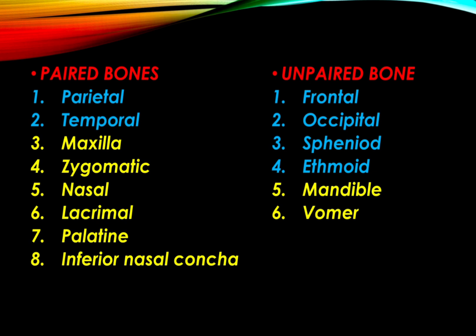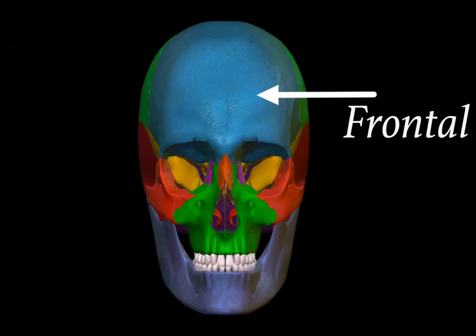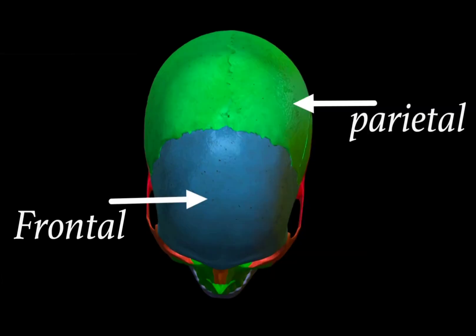First we will look at the bones of the cranial skeleton. The first bone is the frontal bone, located at the front. The second is the parietal bone — parietal bones are paired, two in number, and joined to each other by sutures, visible from the superior aspect of the skull.